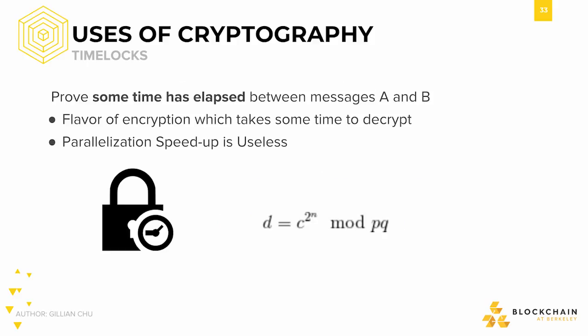Time locks are a special kind of encryption. Time locks allow for a message to be easily encrypted but take a longer amount of time to decrypt. In other words, there is a built-in delay before the information can be retrieved. In addition, it is highly difficult to find ways to speed up the decryption of this information in parallel, meaning that putting multiple computers together won't decrease the delay time.